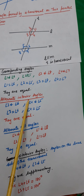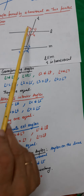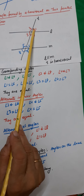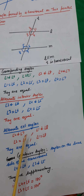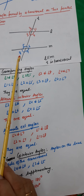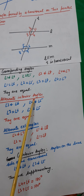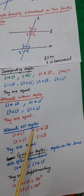If there are alternate interior angles, then there must be alternate exterior angles also. Which are those? They are angle 2 and angle 7, and similarly angle 1 and angle 8. Their property is that they are also equal — angle 2 equals angle 7 and angle 1 equals angle 8. So to summarize: corresponding angles are equal, alternate interior angles are equal, and alternate exterior angles are also equal.